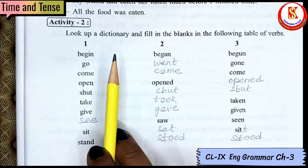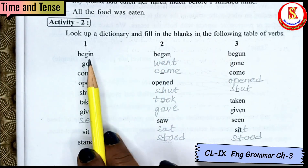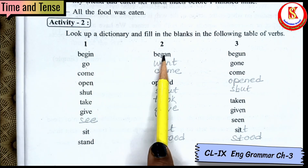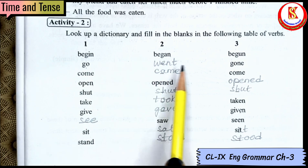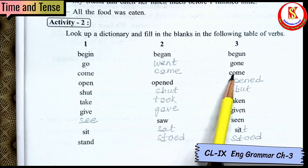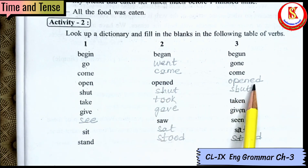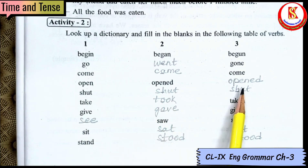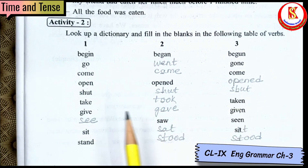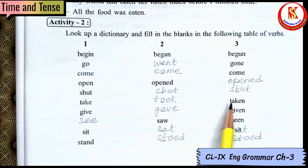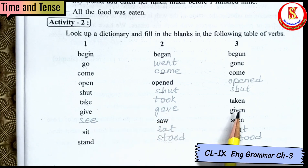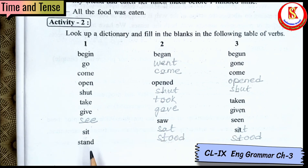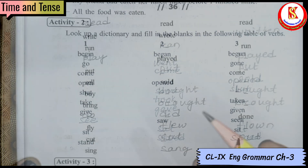Here you have to write the second form and third form — sometimes the first form of the verb. Begin, began, begun. Go, went, gone. Come, came, come. Open, opened, opened. Shot, shot, shot — same form, like put, put, put. Take, took, taken. Give, gave, given. See, saw, seen. Sit, sat, sat. Stand, stood, stood.